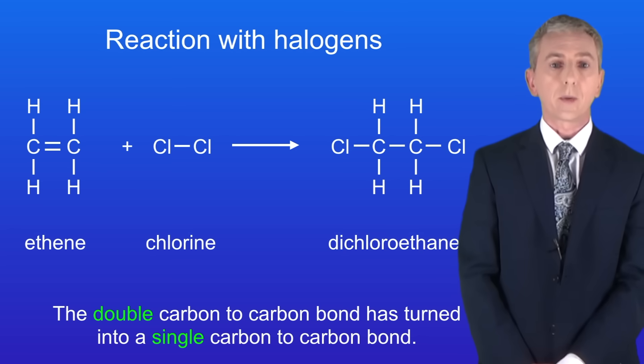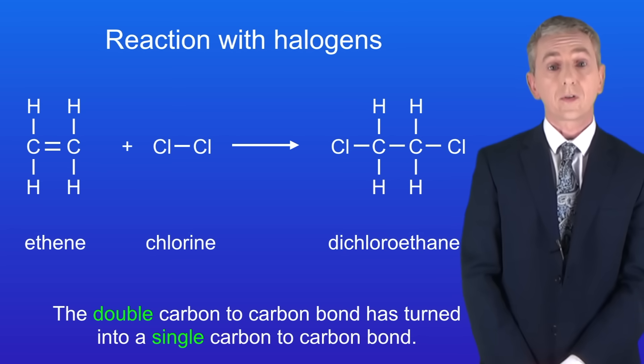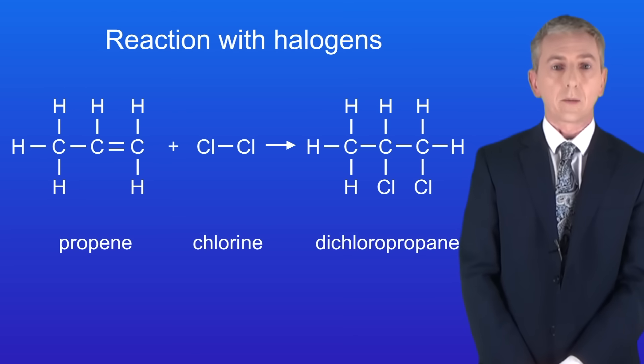And once again the double carbon to carbon bond has turned into a single carbon to carbon bond. This shows the alkene propene reacting with chlorine and again you can see the chlorine atoms adding across the double bond.